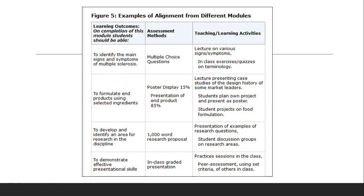For example, if the learning outcome is 'to demonstrate effective presentational skills,' then the assessment should be a graded presentation. Another example: if the learning outcome is 'to develop and identify an area for research in the discipline,' then the assessment should be a 1,000-word research proposal. There should be constructive alignment between the learning outcomes and your assessment.